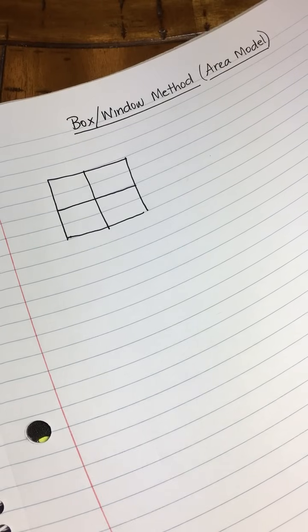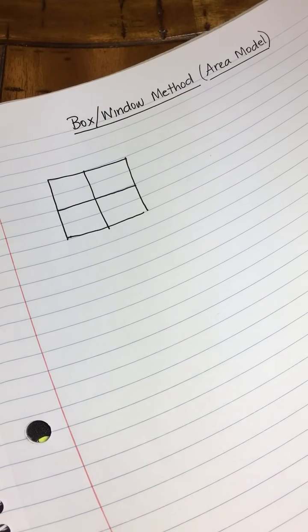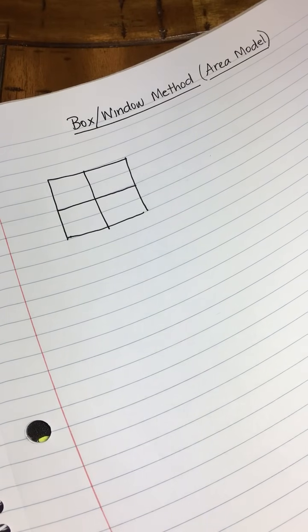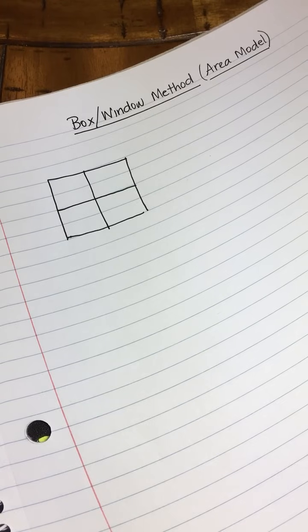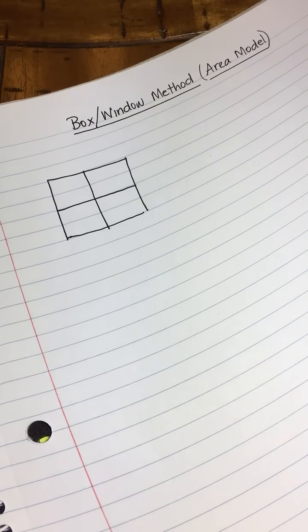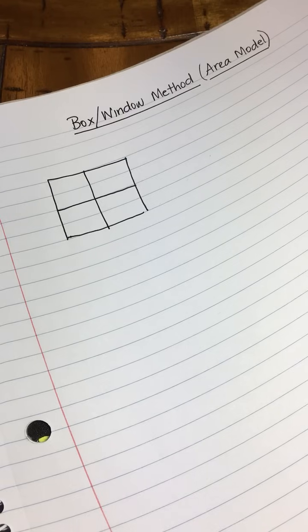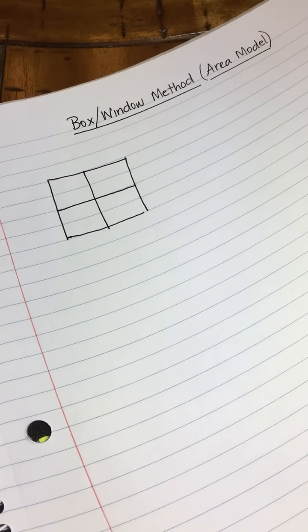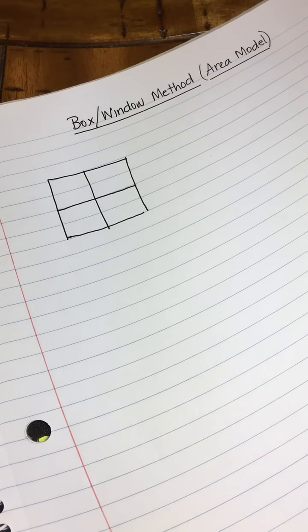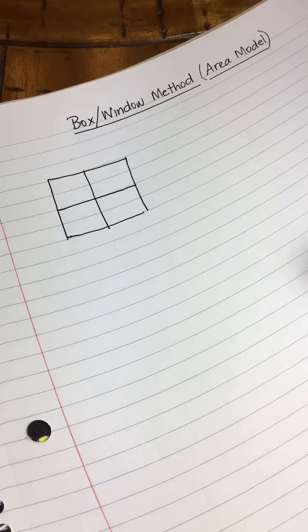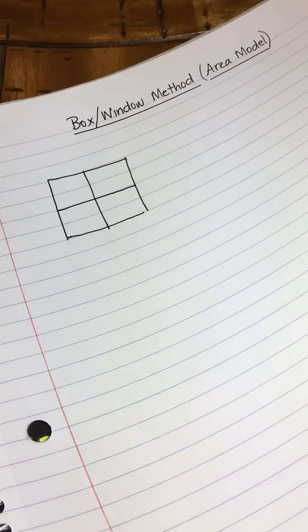Hi there, this is Shelly Gray from ShellyGrayTeaching.com. Today we're going to learn a strategy for multi-digit multiplication called the box or window method. Some people also refer to this as the area model. I'm not going to go into details on that—some area models are slightly different, but this is basically the same thing.